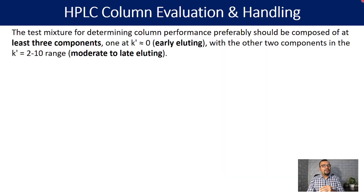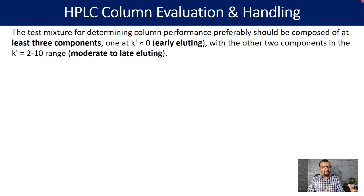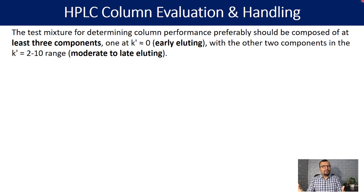It is always preferred to have a column performance mixture containing at least three components. One component should be eluting very early and two components can be eluting quite late. This is going to help you in understanding the retention behavior on your column for three different types of components.